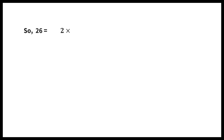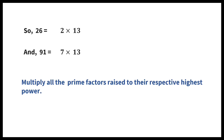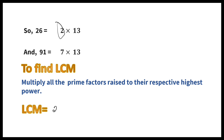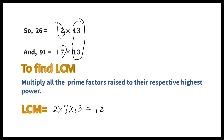So 26 is equal to 2 into 13, and 91 is equal to 7 into 13. To find LCM, multiply all the prime factors raised to their respective highest power. So LCM is equal to 2 into 7 into 13 — writing 13 once since it is common to both — which equals 182.